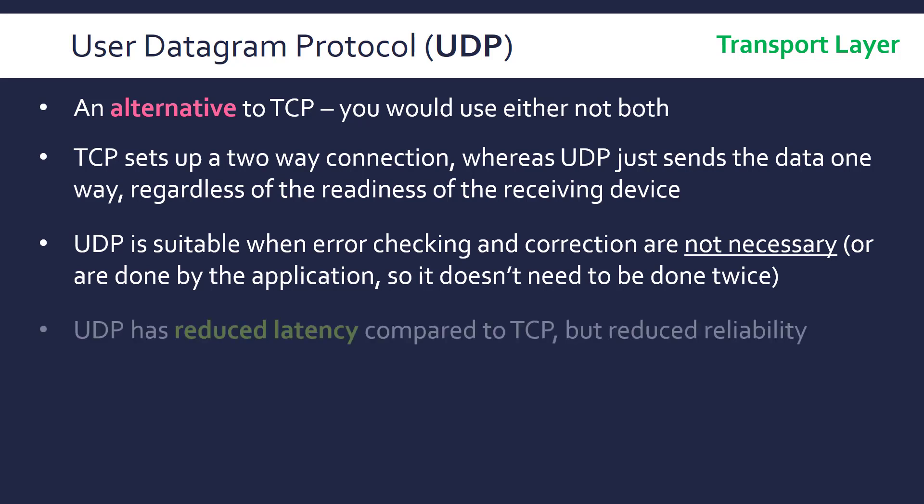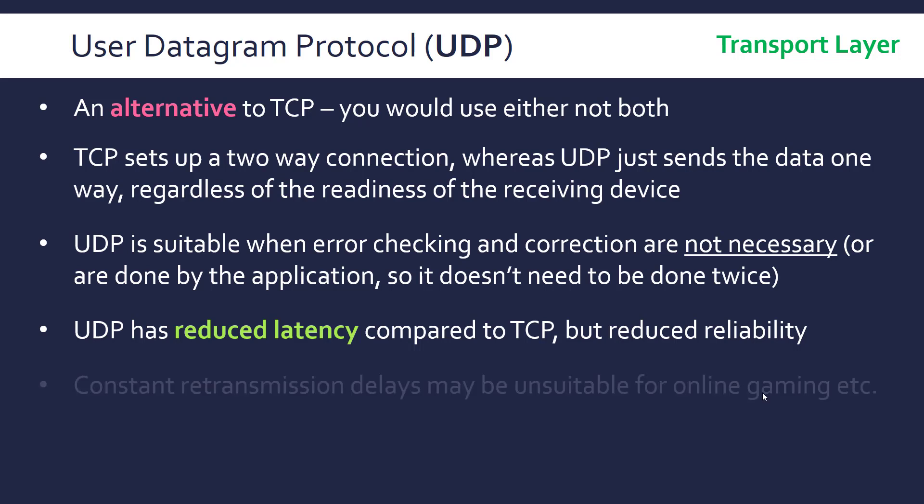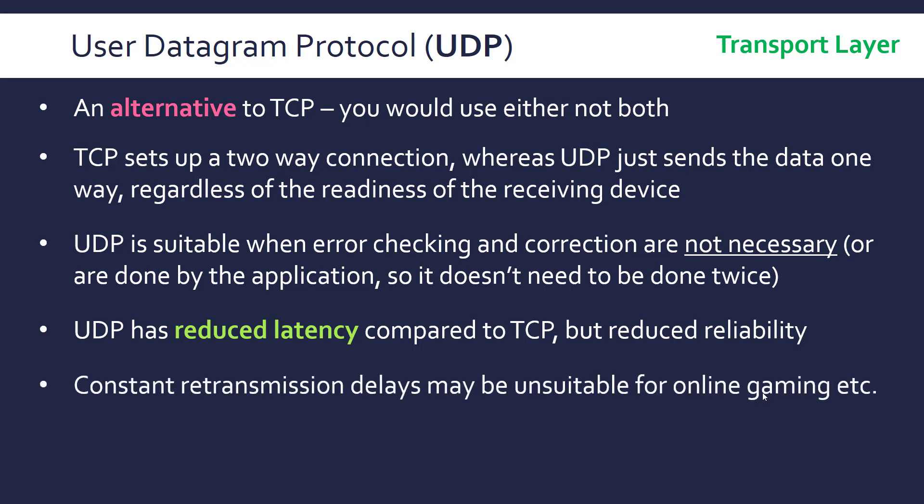UDP is fast and has reduced latency compared to TCP because it doesn't have the extra step of creating an acknowledgement message. Of course, it's less reliable because there's no retransmission if something goes wrong, whereas TCP has potential constant retransmissions.